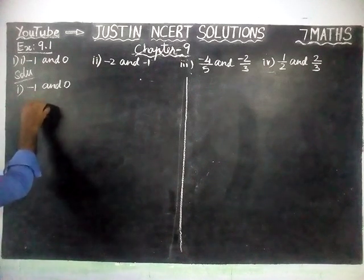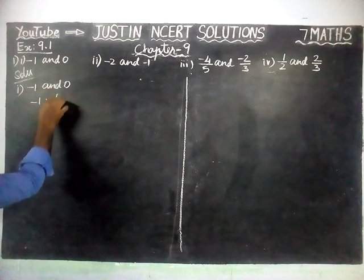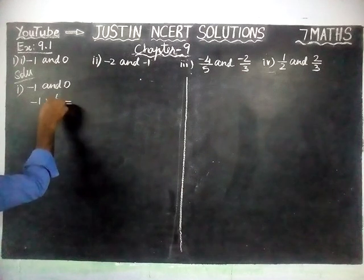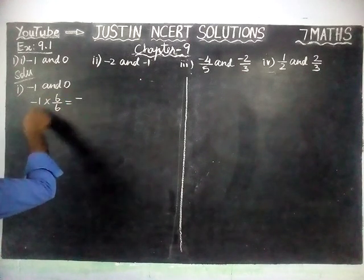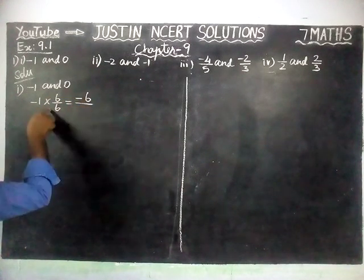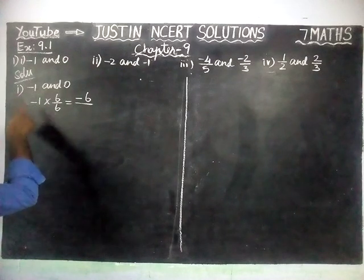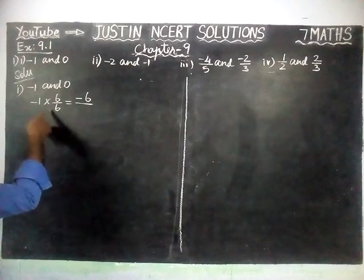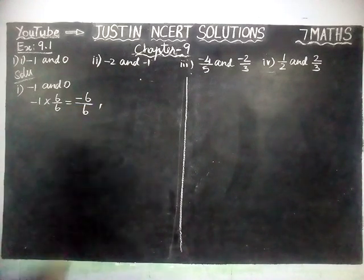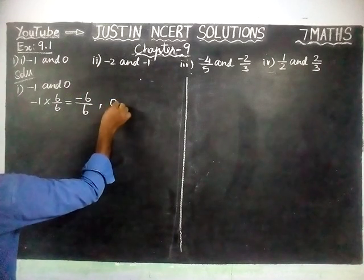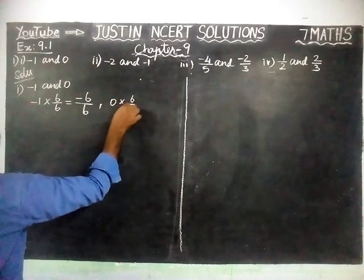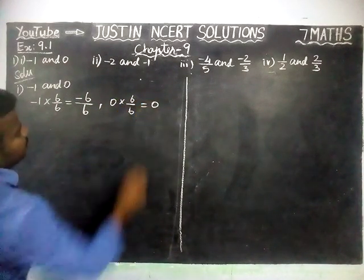So now, minus 1 multiplied by 6/6 is equal to: minus 1 into 6 equals minus 6, divided by 1 into 6 equals 6, giving us minus 6 by 6. And next, here 0 is there — when we are multiplying or dividing by the same number, we will get 0 only.